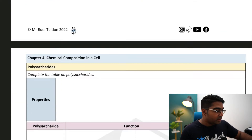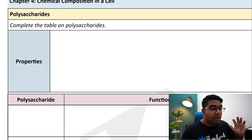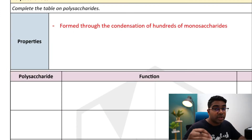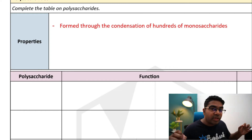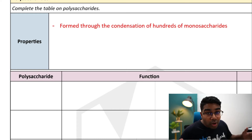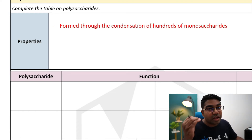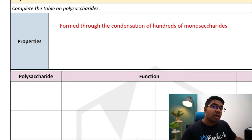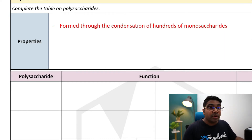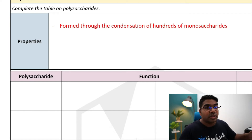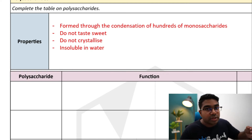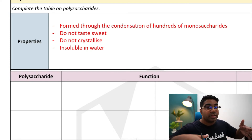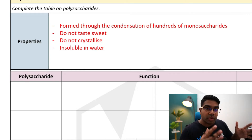The final type of carbohydrate is the polysaccharide — a complex carbohydrate formed through the condensation of hundreds of monosaccharides joined together into one long chain. Although carbohydrates are associated with sweetness, rice and potato don't really taste sweet, and so polysaccharides do not taste sweet. They also do not crystallize and are insoluble in water. The properties of polysaccharides are therefore the opposite of the properties of monosaccharides.